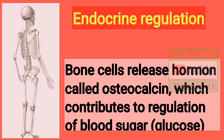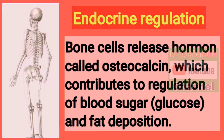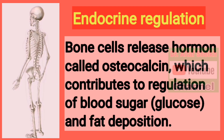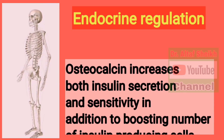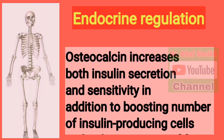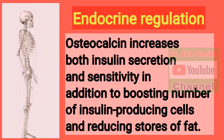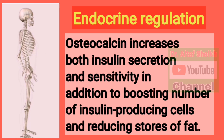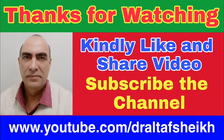Bone cells release a hormone called osteocalcin which contributes to regulation of blood sugar and fat deposition. Osteocalcin increases both insulin secretion and sensitivity, in addition to boosting the number of insulin-producing cells and reducing stores of fat.